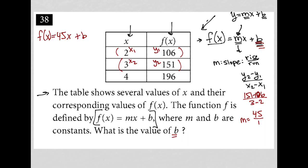So now that I know what m is, I can now take any ordered pair that I like and just simply plug those values in. So I'm going to choose to go with this last row, but really you can choose here or here. Any of these should work. So what does this tell me? That when x is 4, f of x is 196. So I'm going to write this as f of 4 equals 45 times 4 plus b, knowing that f of 4 is 196. So this is really 196 equals 45 times 4 plus b.